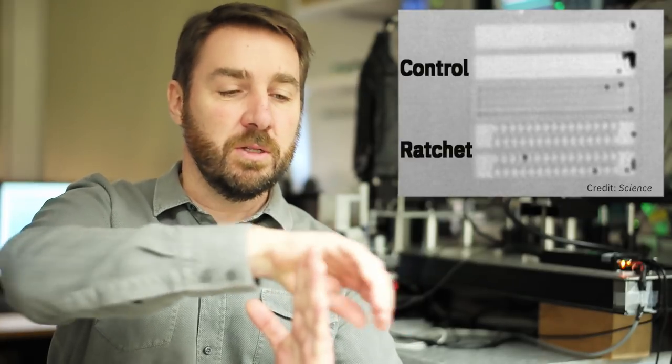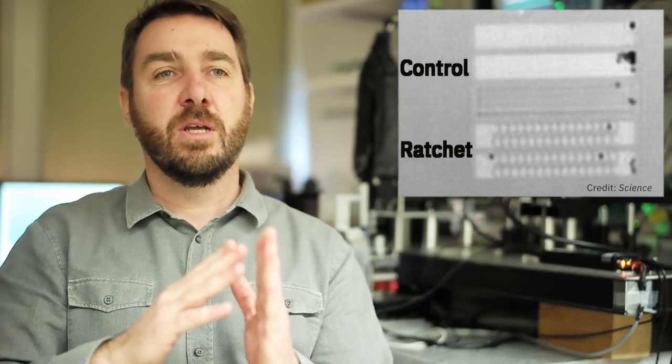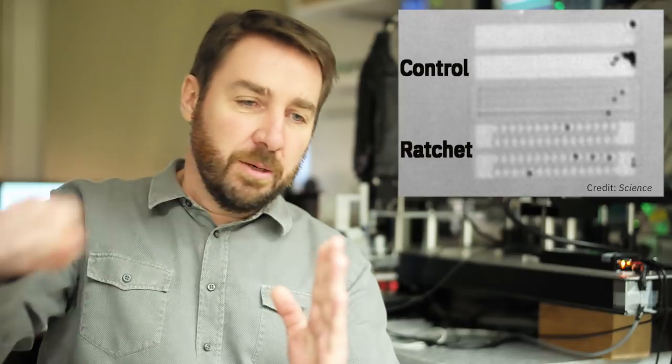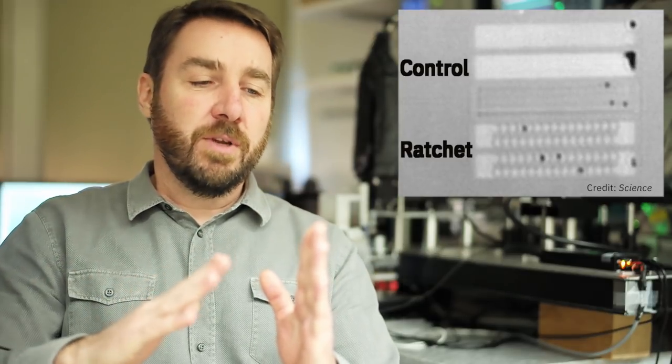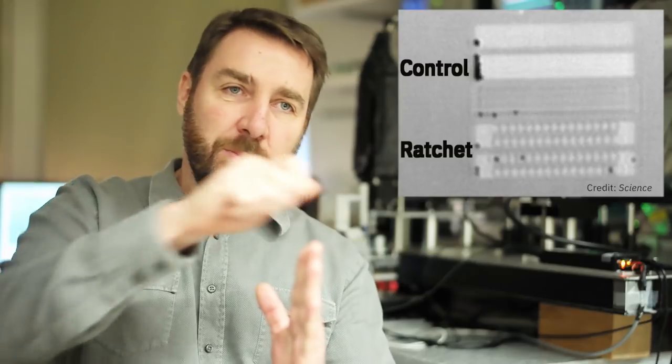And the particles can float along this shallow slope, but they cannot float or are much more difficult, they can float only in the other direction. So at the end we have this jiggling Brownian motion and we have these teeth, and so the particles start to jump.